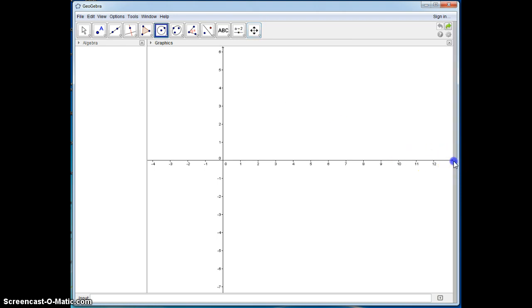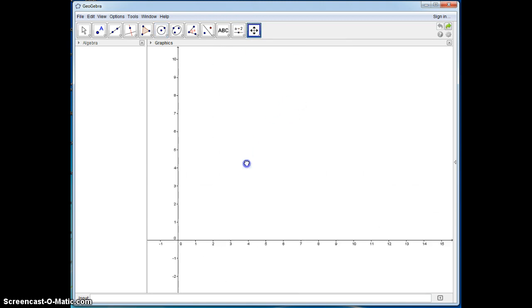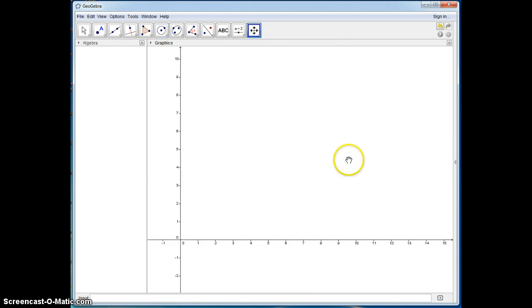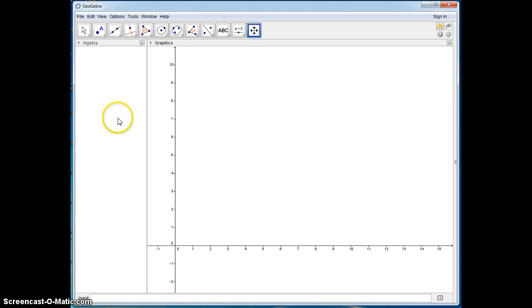First, I'm using the newest GeoGebra. I'm going to be in the algebra view because I want to see the data that comes up on this side. Now I'm going to move my graphics view—this is called the move graphics view—I'm going to push my xy-axis over.